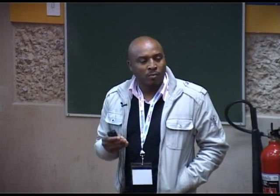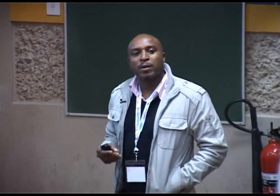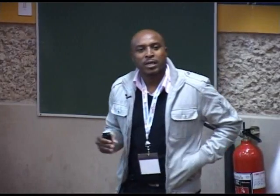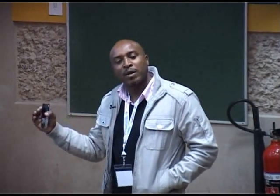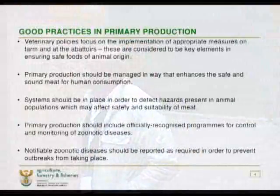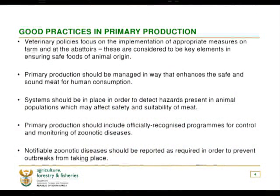At the communal level, there is no meat inspection. So we, as the Department of Agriculture, Forestry and Fisheries, enforce at the farm level or at the slaughter level. Veterinary policies focus on the implementation of appropriate measures on farm and at the abattoirs. These are considered to be key elements in ensuring safe food of animal origin.